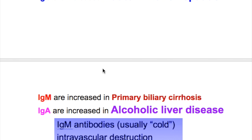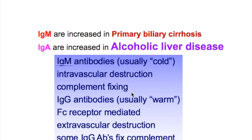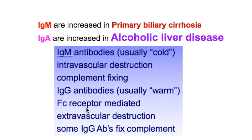Which immunoglobulins are increased in specific liver diseases? In alcoholic liver disease, IgA is increased. In autoimmune hepatitis, IgG is increased, and in primary biliary cirrhosis, IgM is increased. IgM antibodies are usually cold agglutinins and cause intravascular destruction and complement fixation. IgG antibodies are usually warm and cause Fc receptor-mediated extravascular destruction.